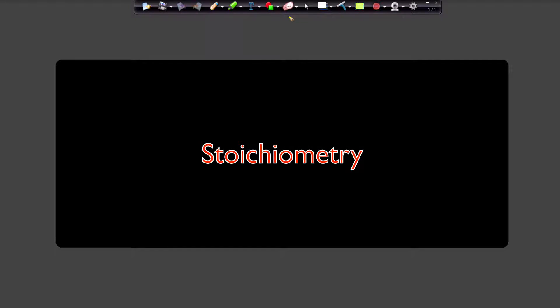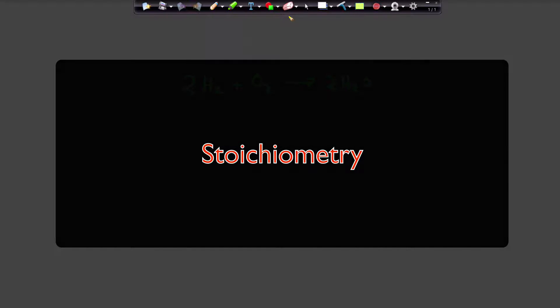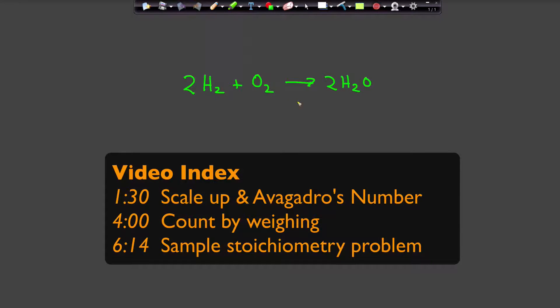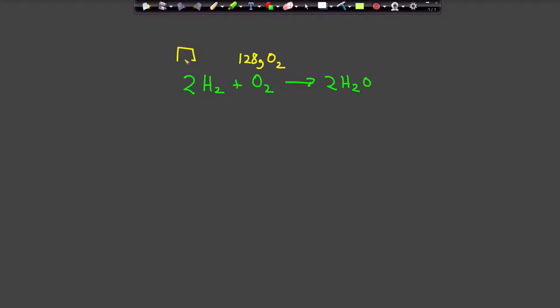Let's now turn to the subject of stoichiometry. This is the area of science that deals with the relative chemical quantities of different reactants and products. For example, if I have 128 grams of oxygen, how many grams of hydrogen do I need to react with that?